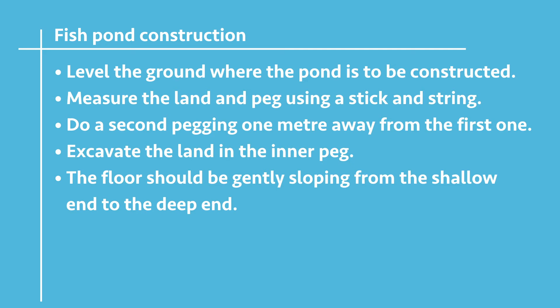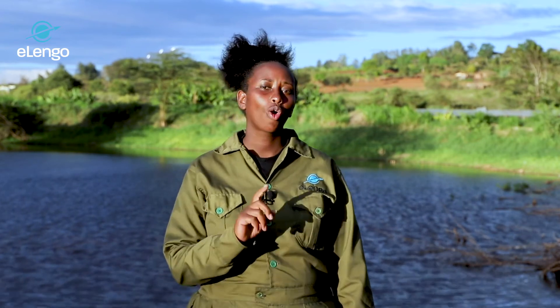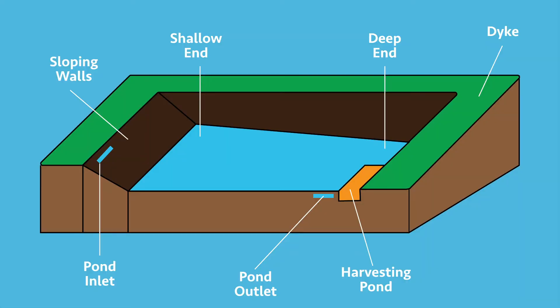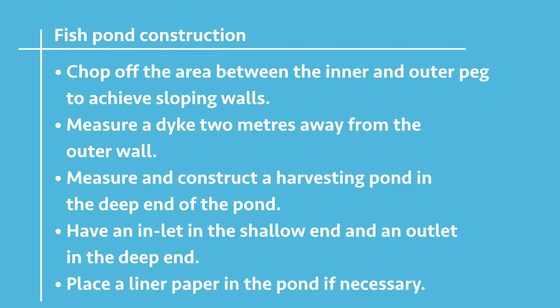After pegging, we now excavate the land. Excavation is done within the inner peg, keeping in mind that the floor of the fish pond should be slanting — the shallow end should be 0.8 meters and the deep end is 1 meter. The sloping walls are achieved by chopping off the area between the inner peg and the outer peg in a slanting way. We also measure the dike, which should be 2 meters away from the outer wall. We then construct the harvesting pond, which measures 1 meter long, 0.5 meters wide, and 0.5 meters deep.